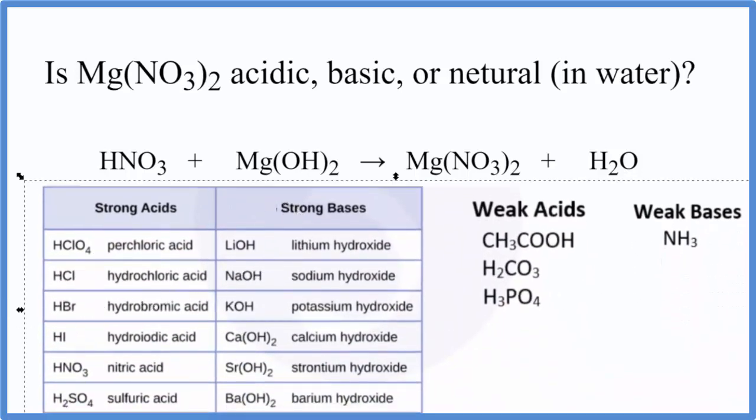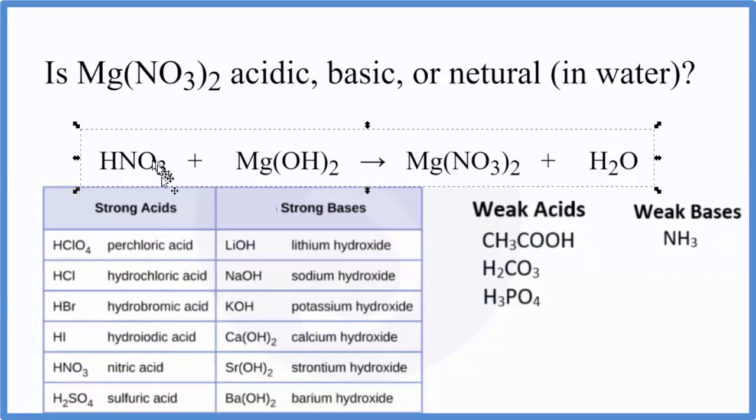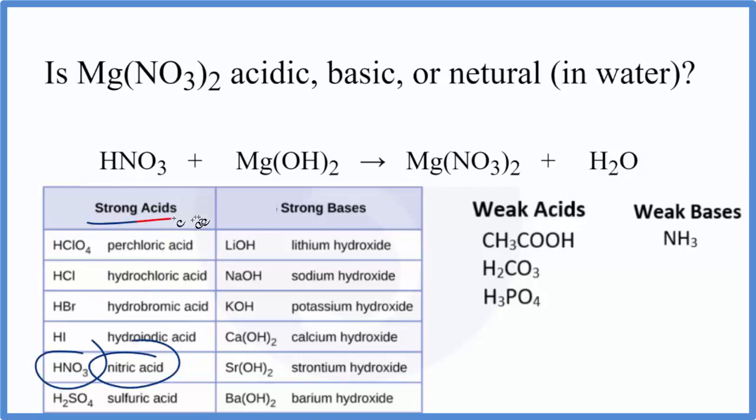So on the table, as we look down, we're looking for nitric acid, HNO₃, which is right here, nitric acid. That's a strong acid, right, SA up here, so we can remember that.